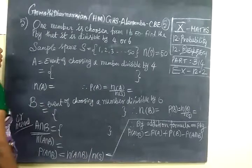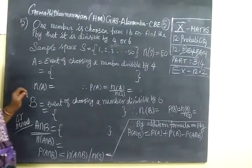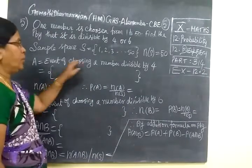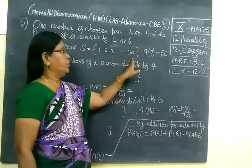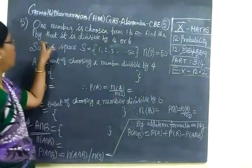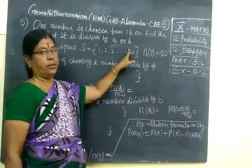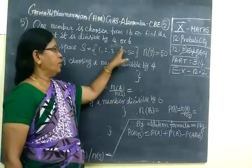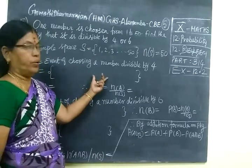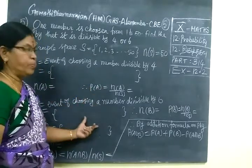Now the fifth question. One number is chosen from 1 to 50. We have given 50 numbers. Find the probability that it is divisible by 4 or 6. We are choosing such numbers which are divisible by 4, then divisible by 6.